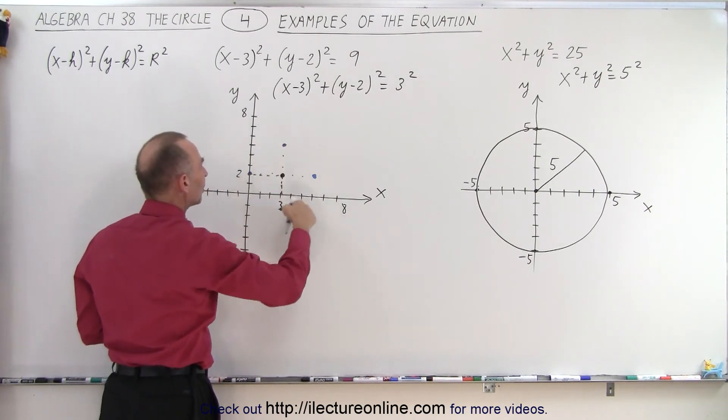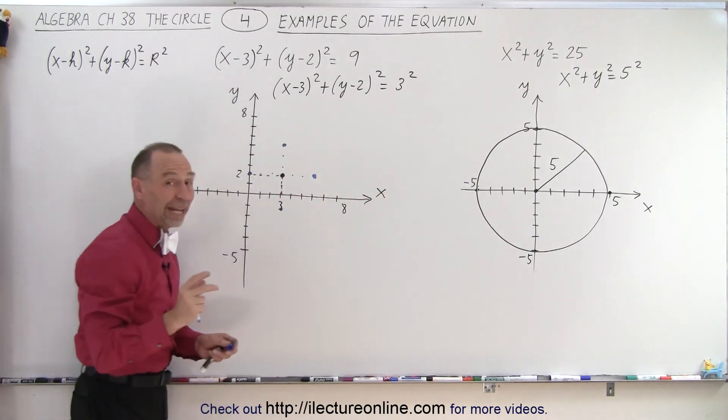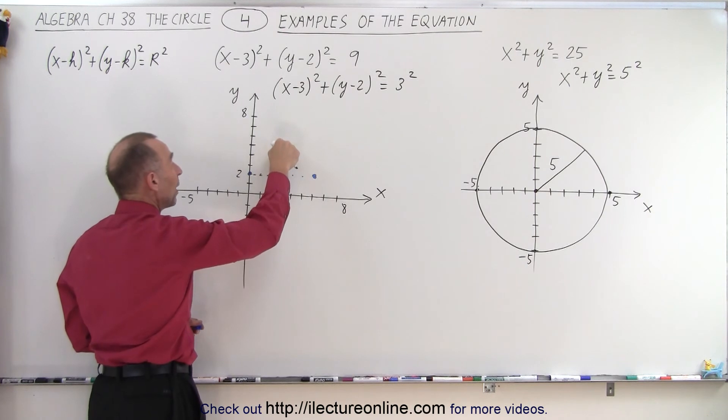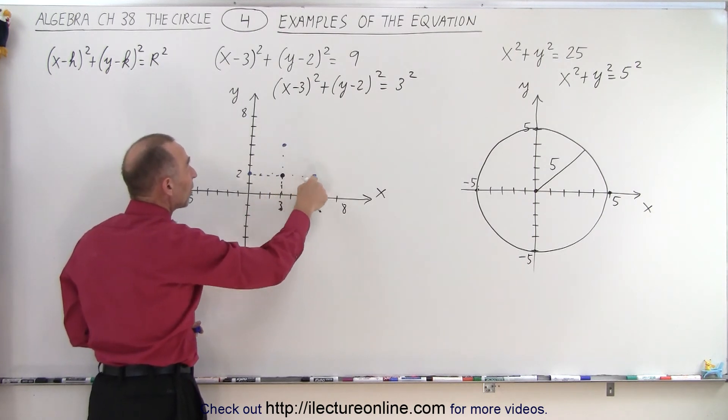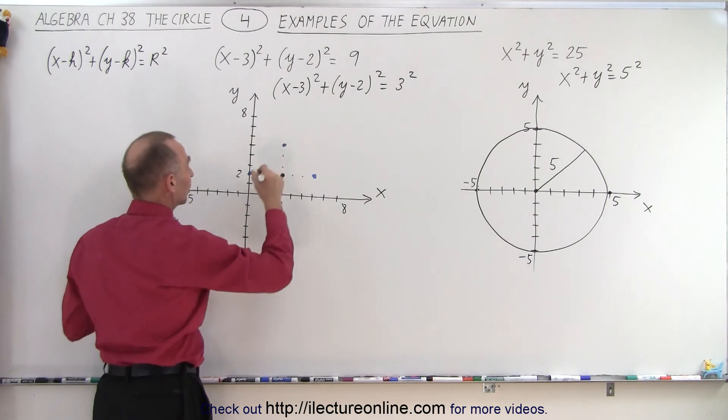So we end up with 4 dots. Each of those dots is 3 units away, because that's the radius of the circle. 3 units away from the center in the positive and negative y-direction, positive and negative x-direction. And then all you have to do is connect those with a circle.